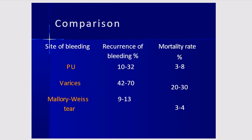Comparing bleeding sources by recurrence and mortality: for peptic ulcer, recurrence is 10 to 32% and mortality is 3 to 8%. For varices, recurrence is much higher at 42 to 70% and mortality is 20 to 30%. For Mallory-Weiss syndrome or a tear, the recurrent bleed rate is 9 to 30% and mortality rate is low.